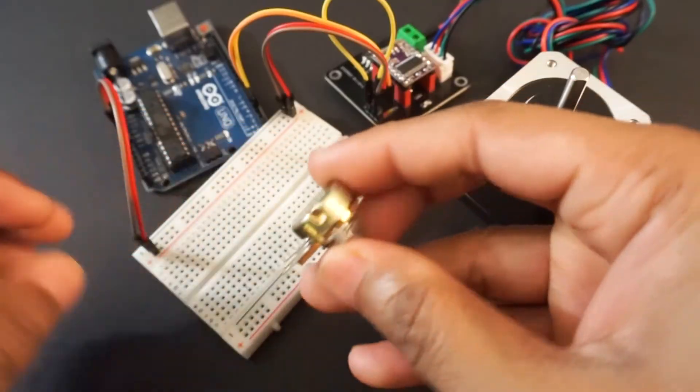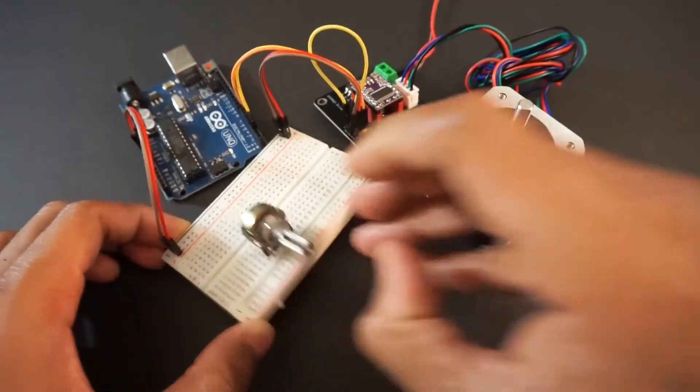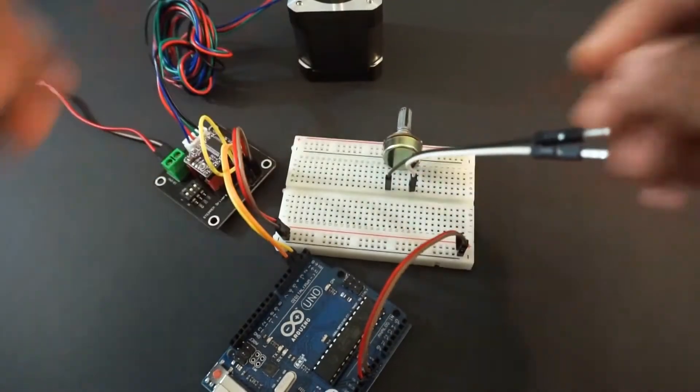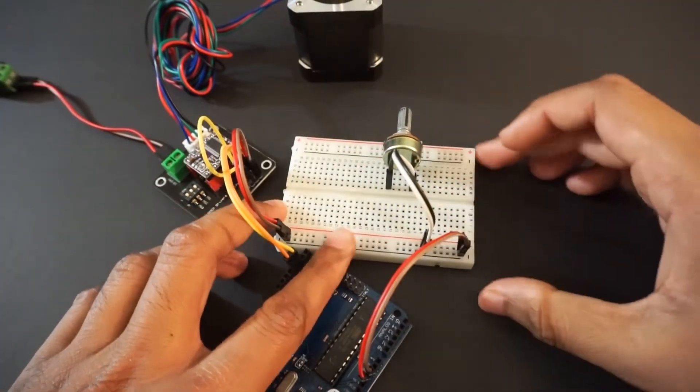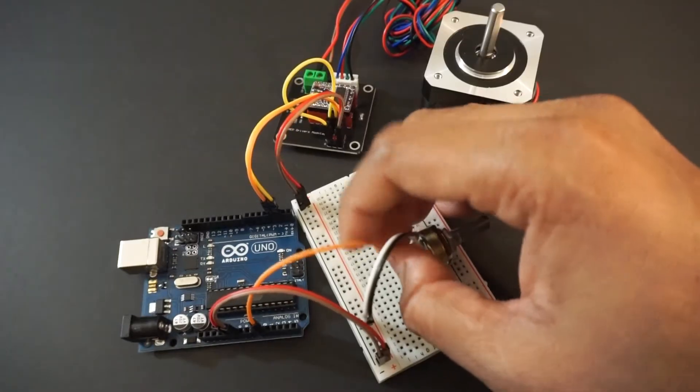Place potentiometer on breadboard. Provide 5 volt and ground to potentiometer. Now connect potentiometer to Arduino's A0 pin.